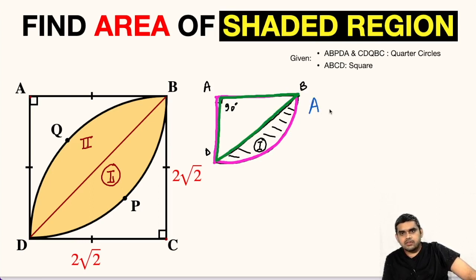The area of this quarter circle will be equal to, let us name it as A1. The area of this quarter circle will be equal to pi times R squared divided by 4, which will be equal to pi by 4 times 2 root 2 whole square. This will be pi by 4 times 8, so 4 times 2 will give us 8, so this will be 2 pi.